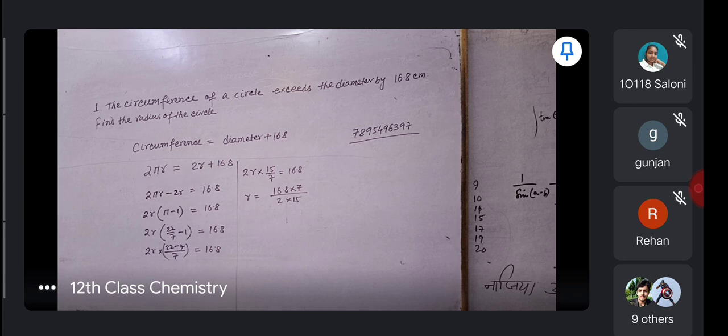So here we have 2 r, here we have 2 r, here we have pi minus 1. So 22 by 7 minus 1, 7, 15, 7.